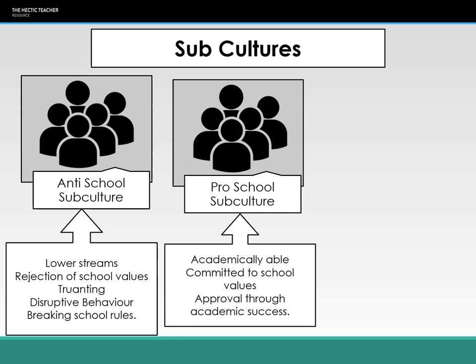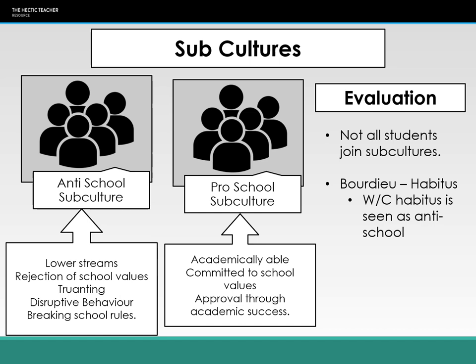However, by gaining status through an anti-school subculture — through truanting, disruptive behaviour and breaking school rules — working class students are more likely to underachieve. A problem with this theory is that not all students join subcultures; the school isn't neatly divided into pro-school and anti-school groups. So it doesn't really apply to the majority of working class students. Bourdieu never said that working class habitus was less than middle class culture — just different — and perhaps it's schools that need to change, rather than reinforcing symbolic violence against working class students.